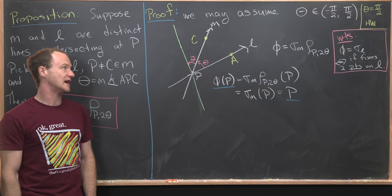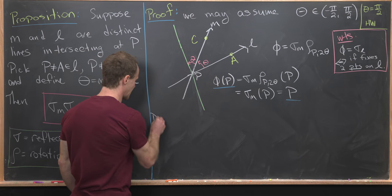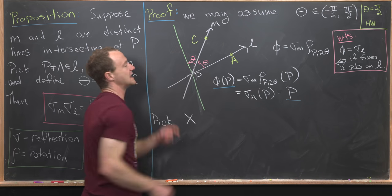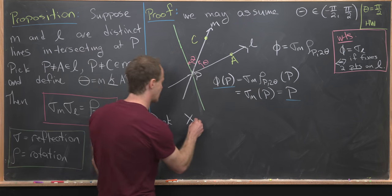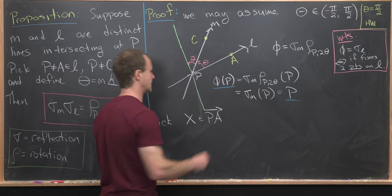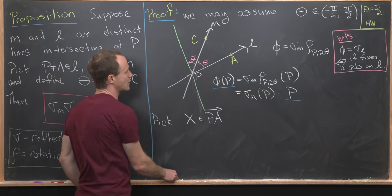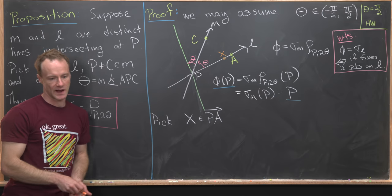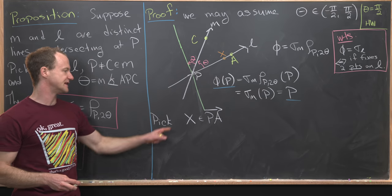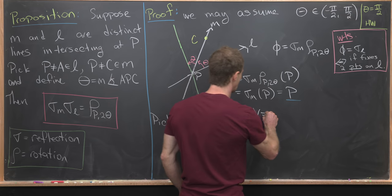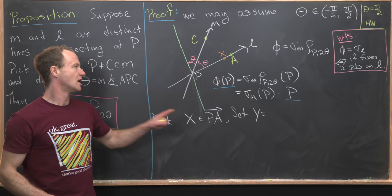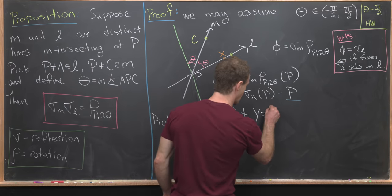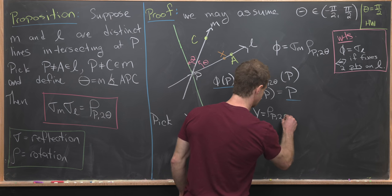Next up, we need to find another point. So let's pick another point, I'll call it capital X. It's going to be on the ray from P to A. So let's put capital X right here, that's definitely on that ray. And next we'll define Y to be equal to the image of capital X under our rotation about P of angle two theta. So that's going to be rho P two theta X.